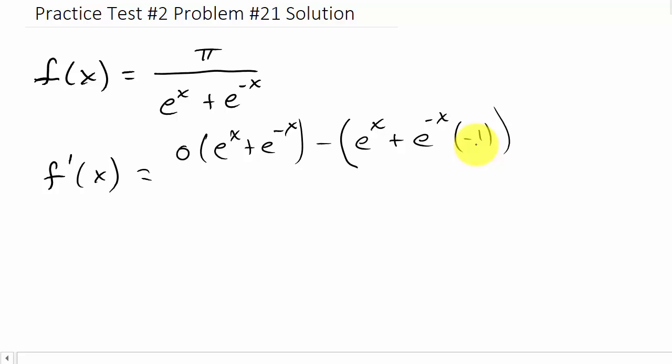So that's the derivative of the denominator, and then times the numerator, and this is all over the denominator squared.